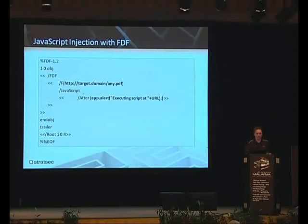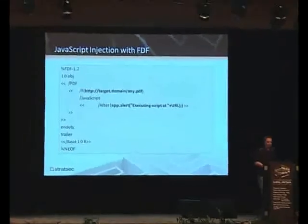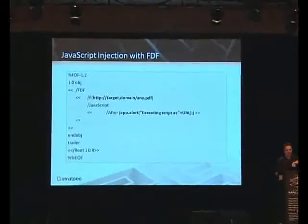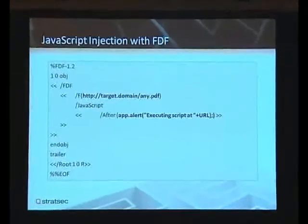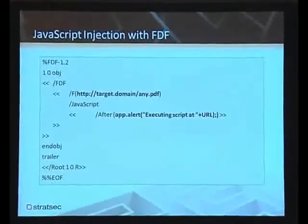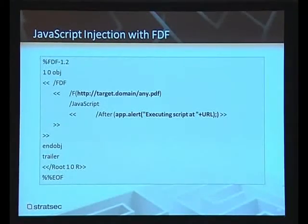That's what an FDF file looks like — a really basic one, anyway. We have the slash F command, which specifies the target — which is the PDF to be loaded. And then we have the slash After command, which says after you've loaded the PDF, then execute this script.